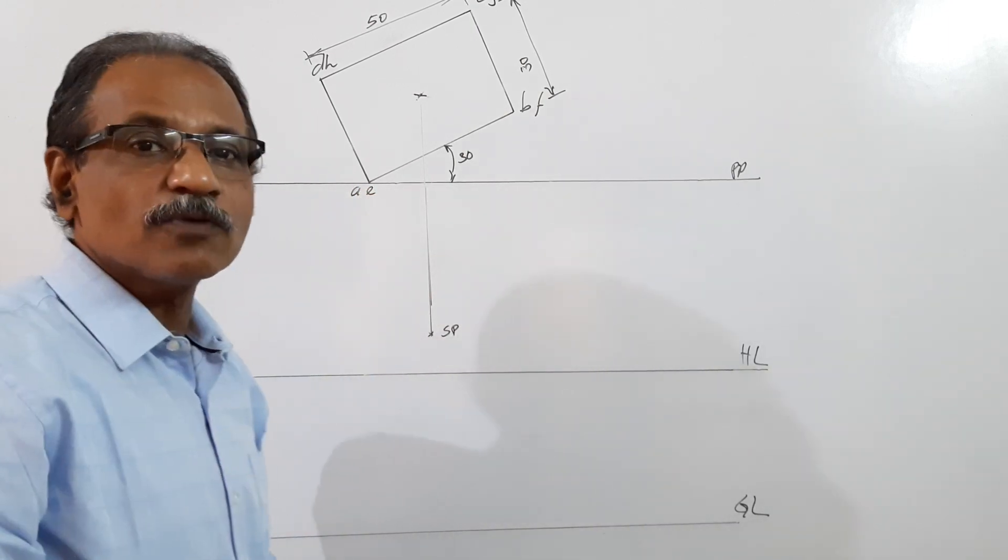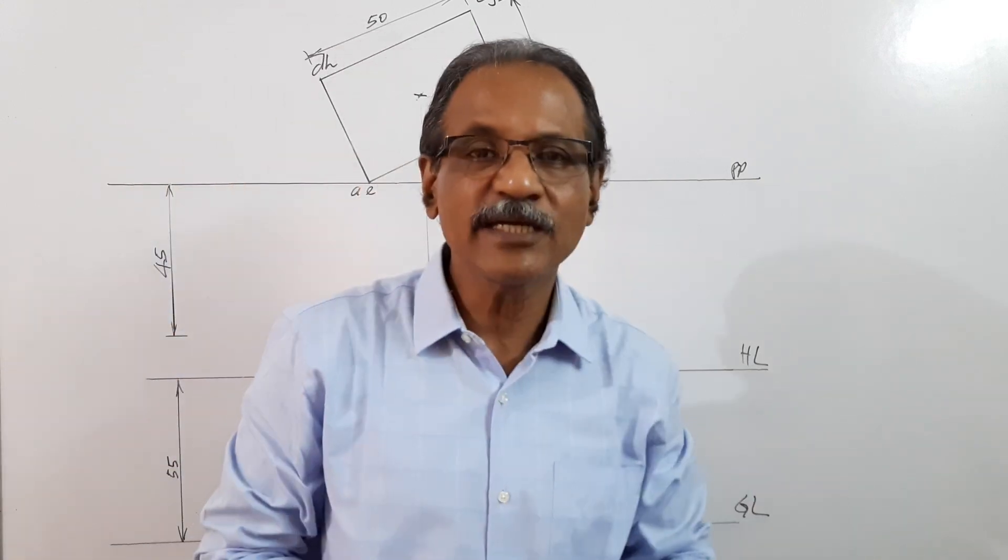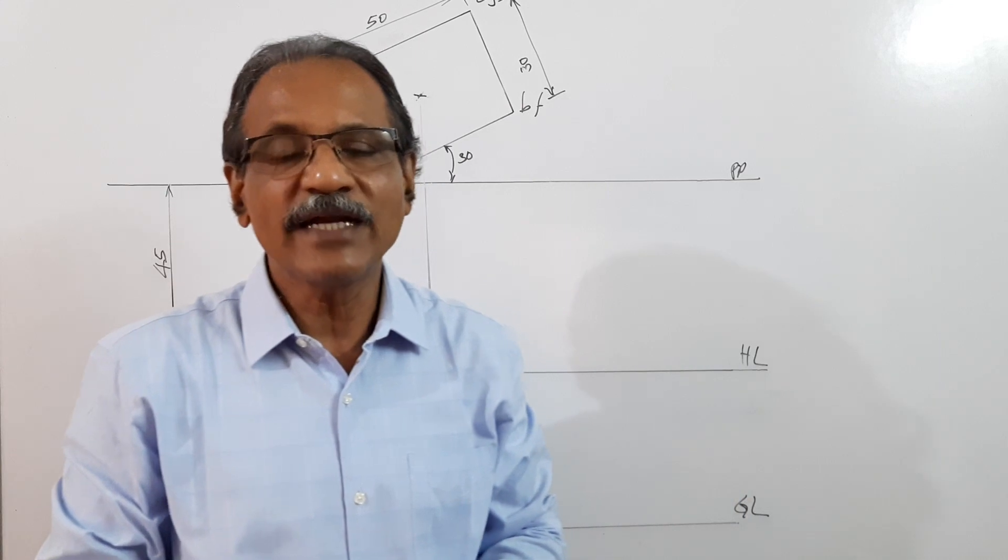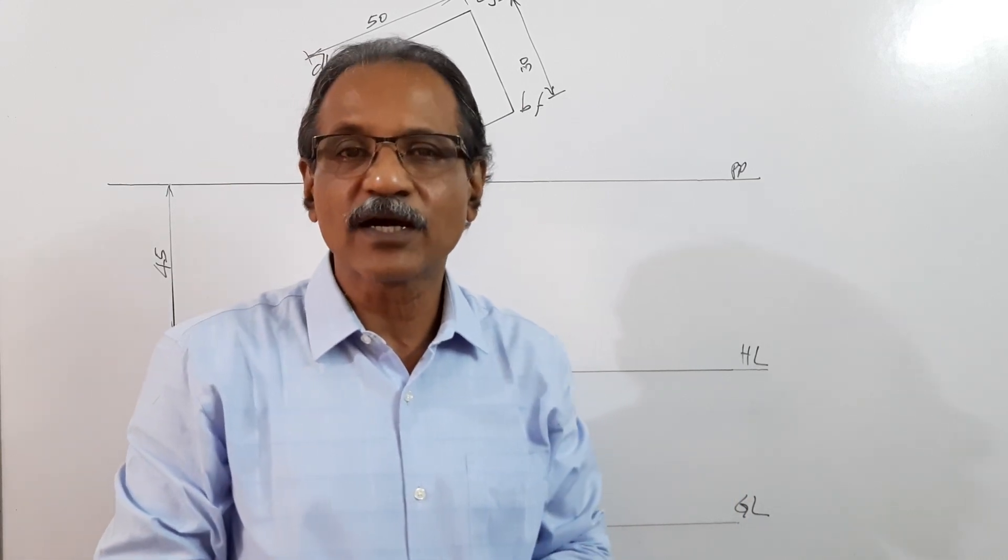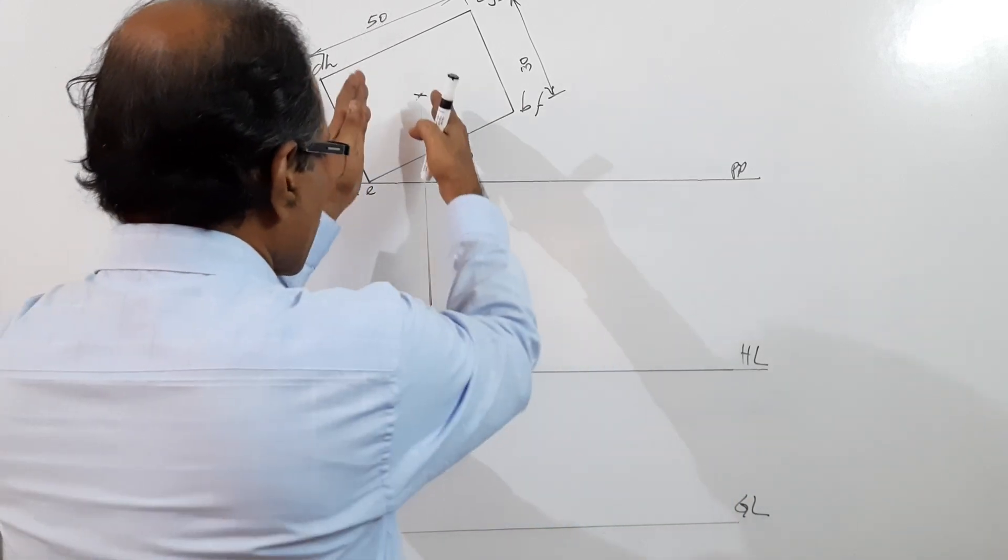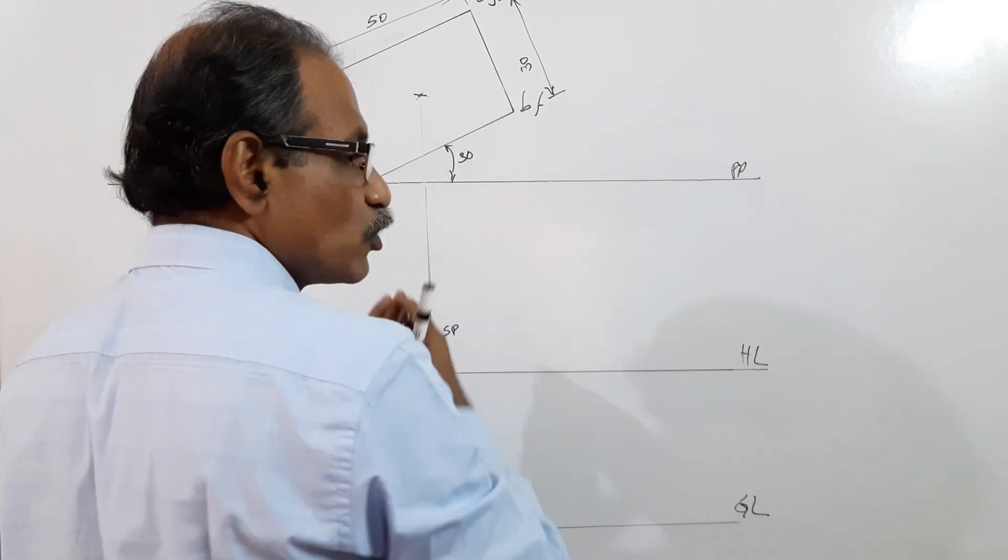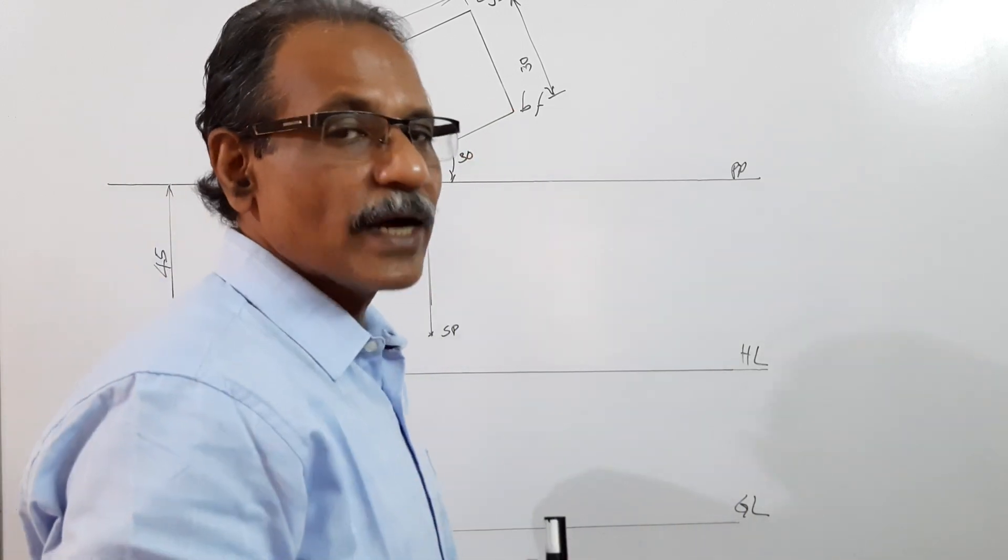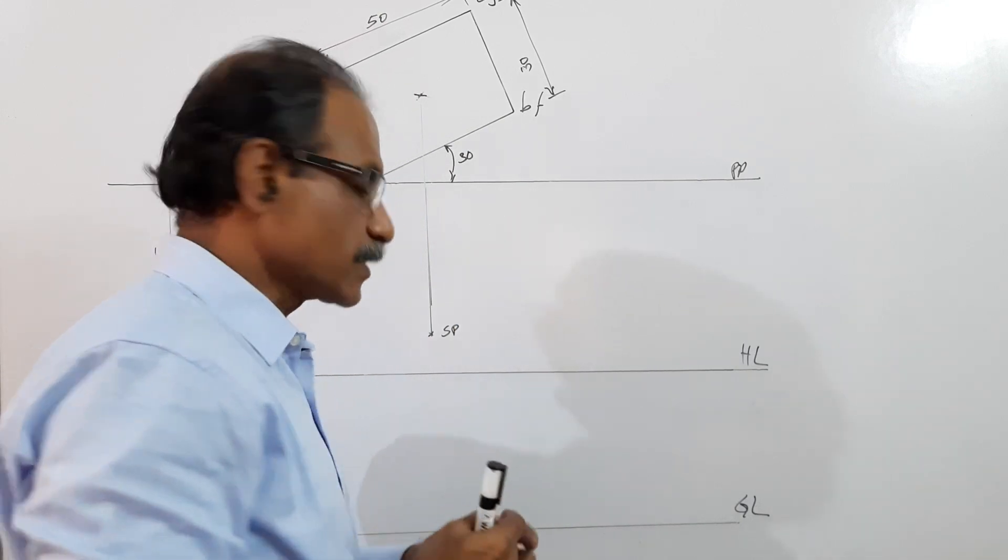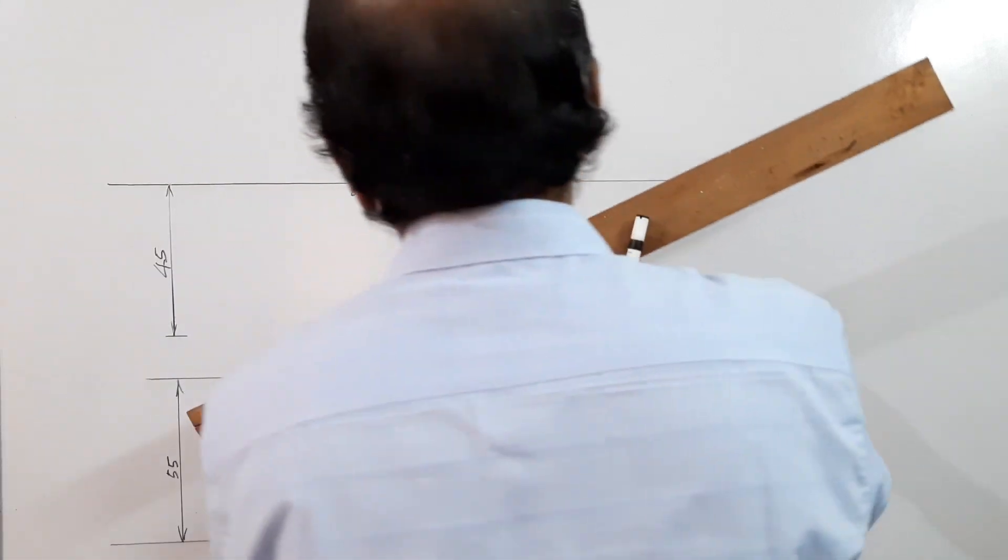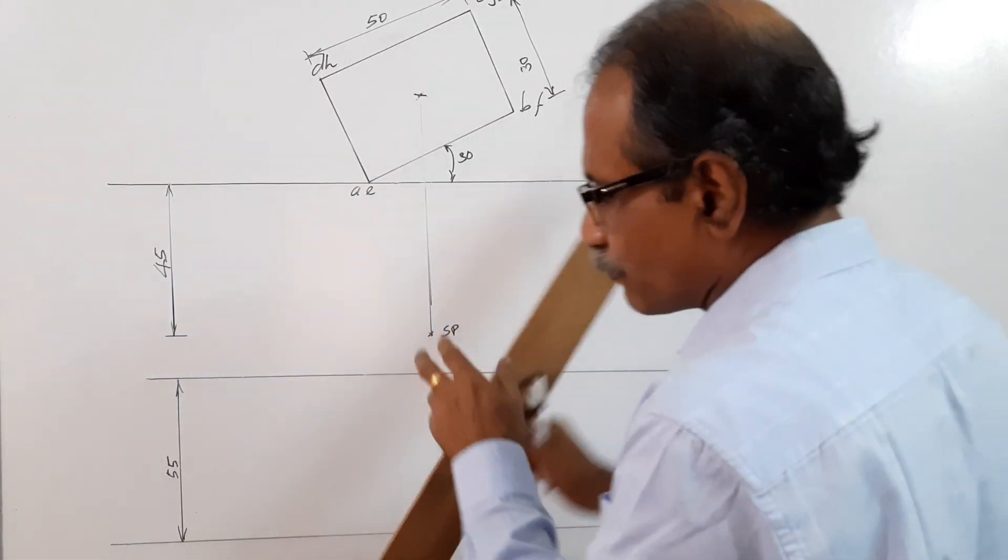Now you have to find the vanishing point. This can be drawn by two methods: one is called the vanishing point method and the other is called the visual ray method. In such a question, vanishing point method will be preferable because the station point is right below or right in front of the center of the object. In such cases, vanishing point method will be easier.